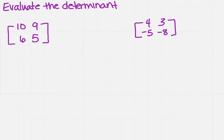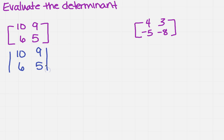We want to evaluate the determinant of each of these matrices. The first thing I need to do is write it so it looks like the determinant. In order to do that, remember we use the vertical bars, kind of like we did in Absolute Value, and then I rewrite everything that's inside. To find the determinant, we're going to multiply at an angle. So I multiply the 10 and the 5, and I multiply the 9 and the 6.